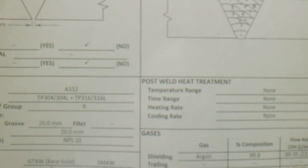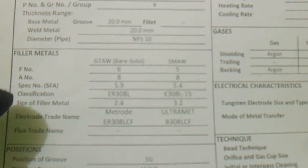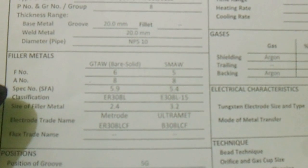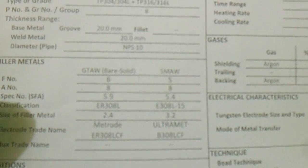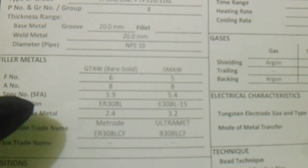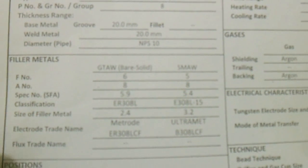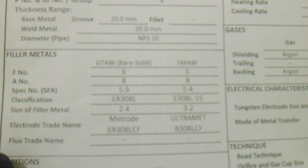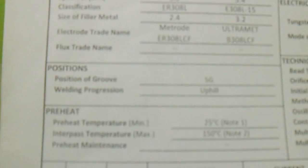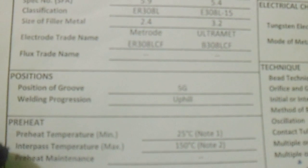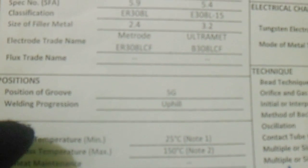Next, filler metals. What filler metals are to be used: F number, A number, specification number, classification, size electrode, trade name, and flux trade name.